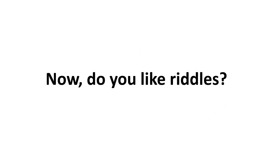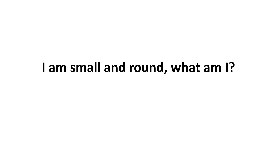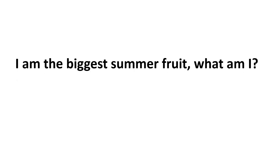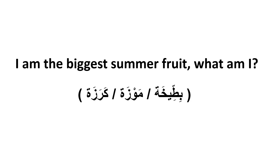Now, do you like riddles? Let's check our understanding. Riddle one: I am small and round — what am I? عنبة، بطيخة، أم موزة? The correct answer is عنبة — grape. Riddle two: I am the biggest summer fruit — what am I? بطيخة، موزة، أم كرزة? The answer is بطيخة — watermelon.